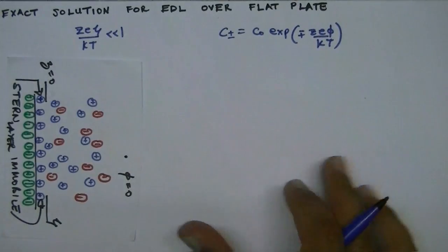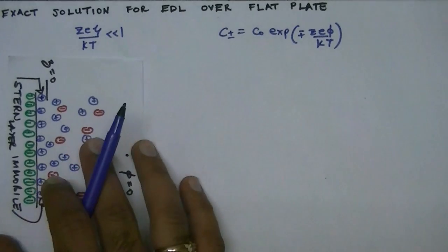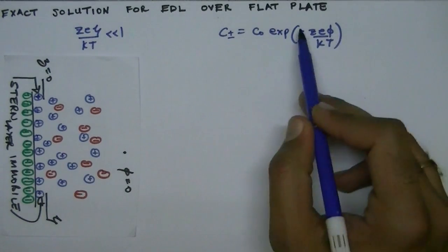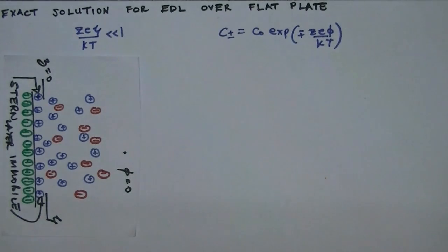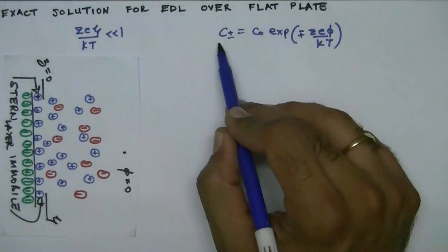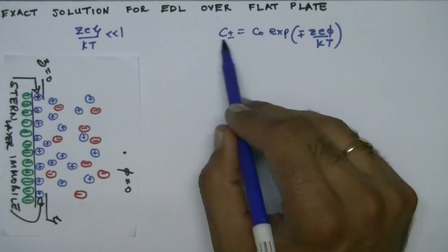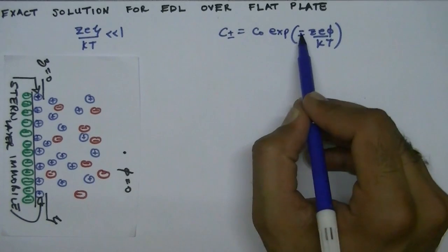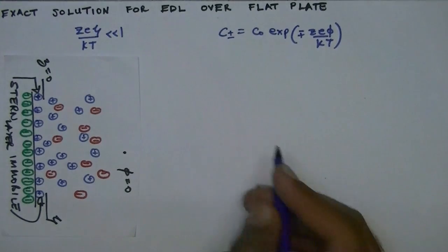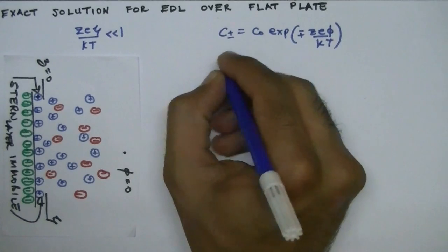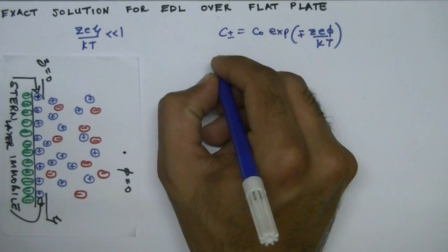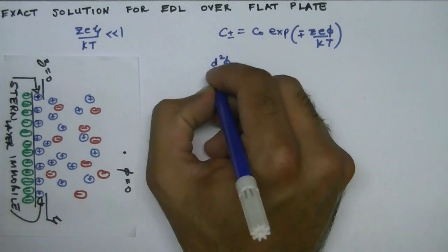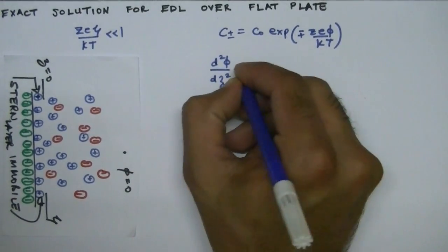Because we have a negatively charged wall, our potential is negative. Therefore we have a negative sign in the expression for the concentration of positive ions and a positive sign for negatively charged species. Substituting this form of concentration into the Poisson equation gives us the Poisson-Boltzmann equation.